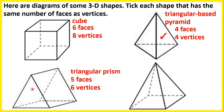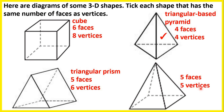For this shape we have 5 faces — a square face at the bottom and 4 triangular faces connecting each edge of the square to the top of the pyramid. And we have 5 vertices — one in each corner of the square, so 4 vertices at the bottom, plus another vertex at the top. So we have the same number of faces and vertices, and this shape is called a square-based pyramid.